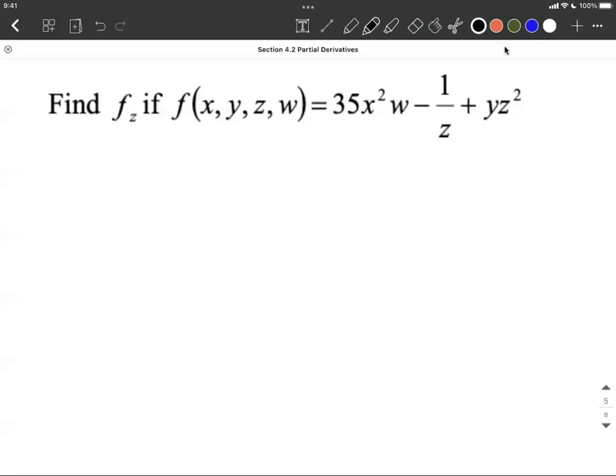Okay, we're going to find the partial derivative with respect to z of this complicated-looking function f that has four different variables being input. So since we want to focus on z as being our true variable in this case, I notice that we have that 1 over z fraction along the way.